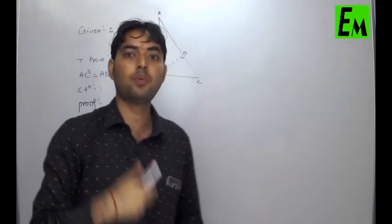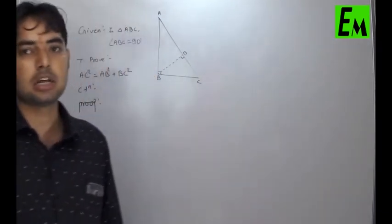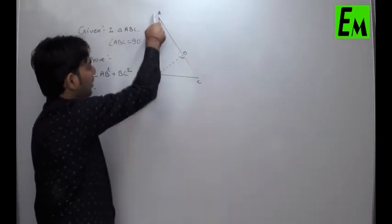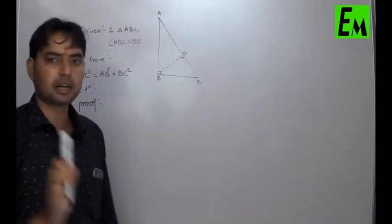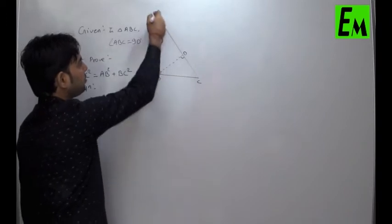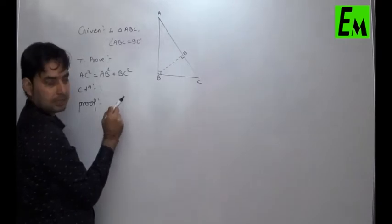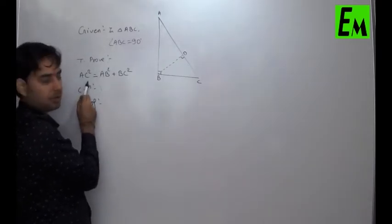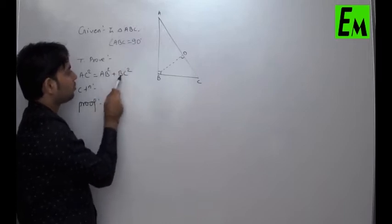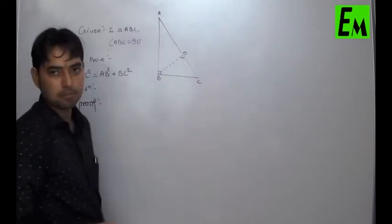In a right-angled triangle, the square of the hypotenuse is equal to the sum of squares of the other two sides. Here, triangle ABC is a right-angled triangle, right-angled at B. We have to prove that AC² equals the sum of squares of the other two sides AB and BC, that is, AB² + BC².